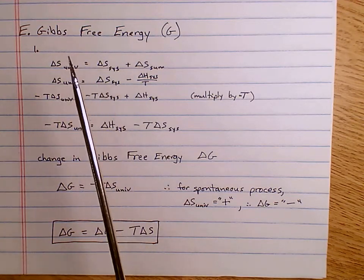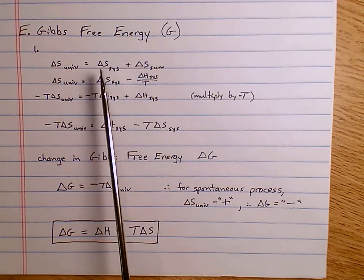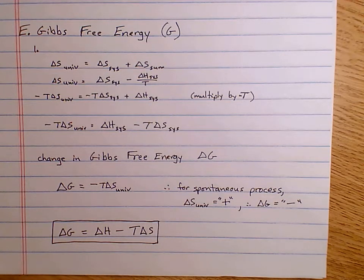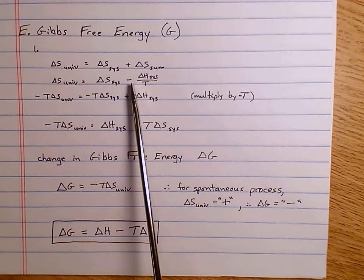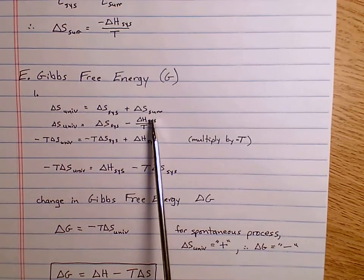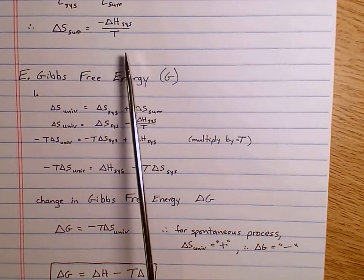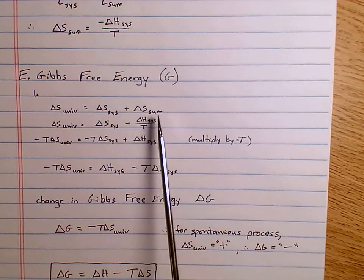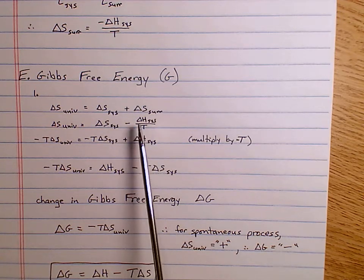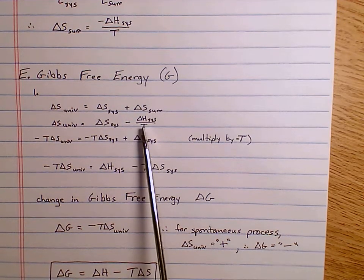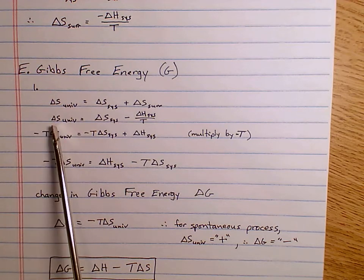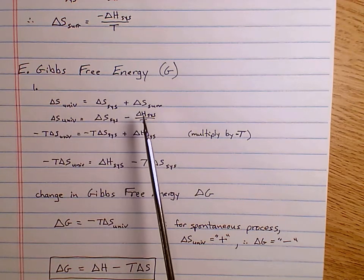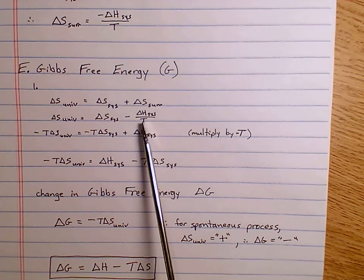As we said before, the change in entropy of the universe equals the change in entropy of the system plus the change in entropy of the surroundings. The change in entropy of the surroundings is negative delta H of the system over T. So that means this equation becomes: the change in entropy of the universe equals the change in entropy of the system minus delta H of the system divided by temperature.